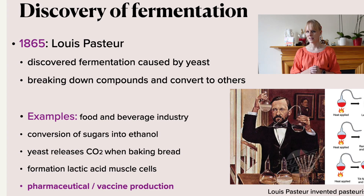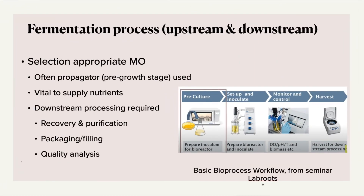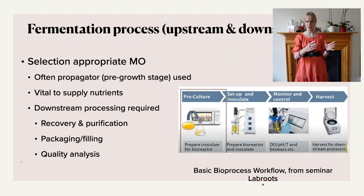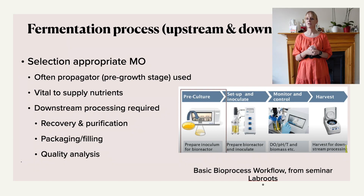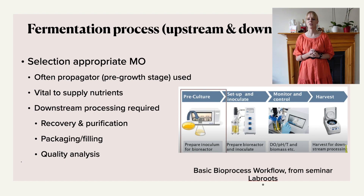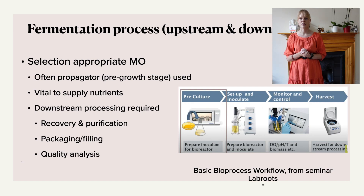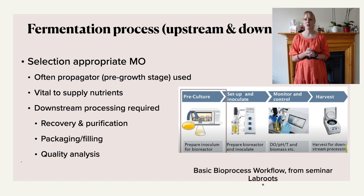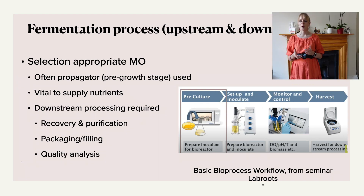Here you will see how the fermentation process occurs in general. We have the upstream process, which covers the reaction itself, and the downstream process, which involves separation and purification. Usually you start with microorganisms that must be grown to an appropriate quantity using a propagator, culturing them until a desired concentration is reached — measurable, for instance, by optical density.